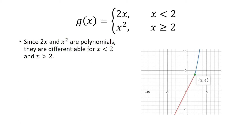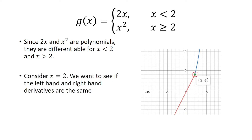Since 2x and x squared are polynomials, they're going to be differentiable for x less than 2 and x greater than 2. Again, we want to see what happens at this point. We want to see if the left-hand and right-hand derivatives are the same. So let's take the derivative. The derivative of 2x is going to be 2 for x less than 2, and the derivative of x squared is 2x for x greater than or equal to 2.